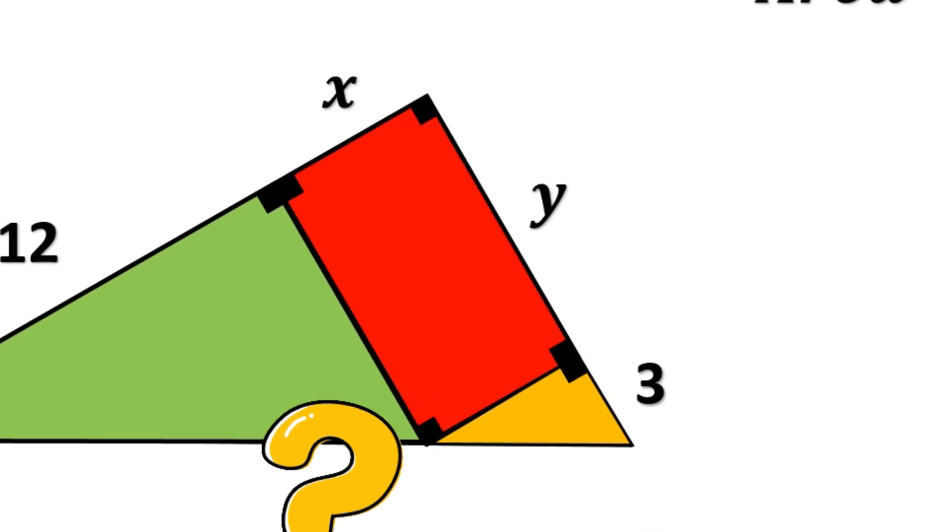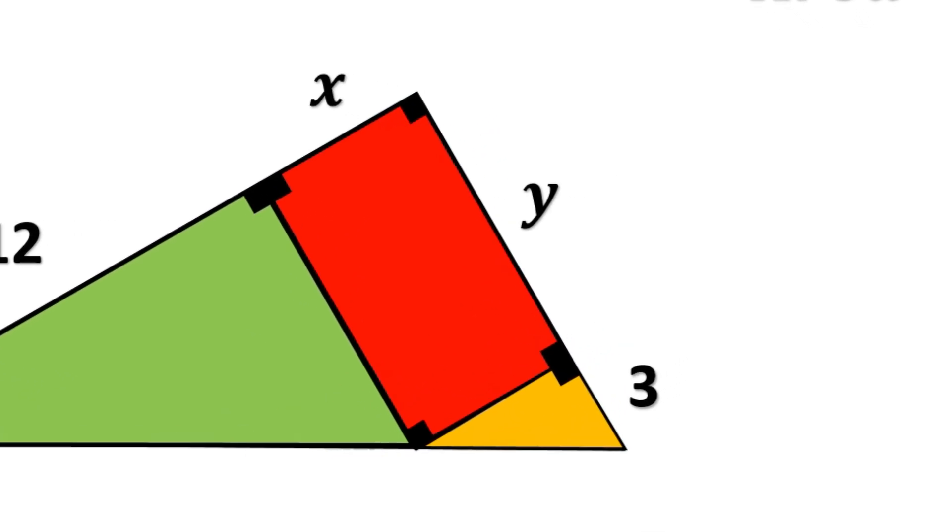Why? The rectangle is placed inside a right triangle, and because all of its corners are 90 degrees, its sides naturally become parallel to parts of the larger triangle. And whenever parallel lines show up, matching angles show up too. And that's where the magic starts.